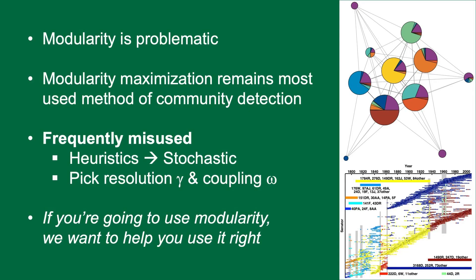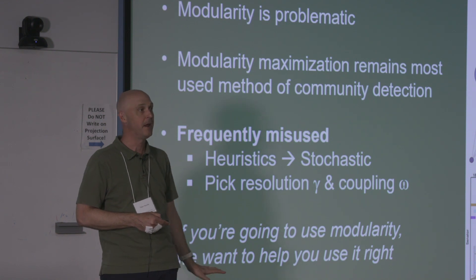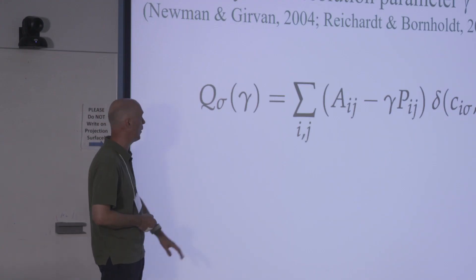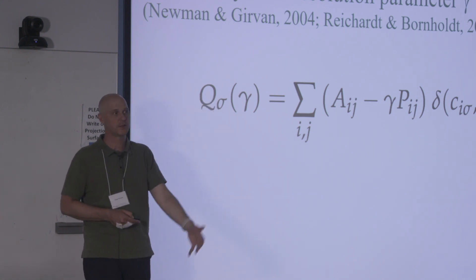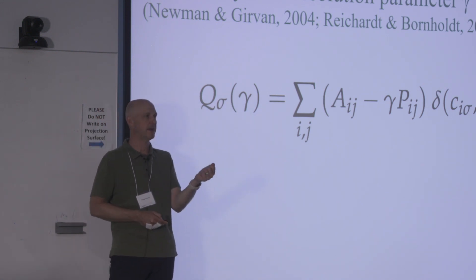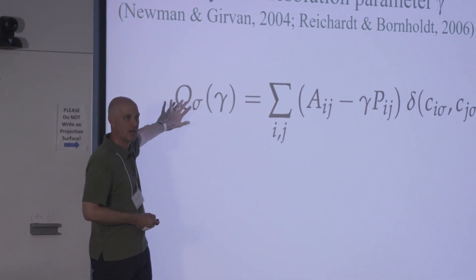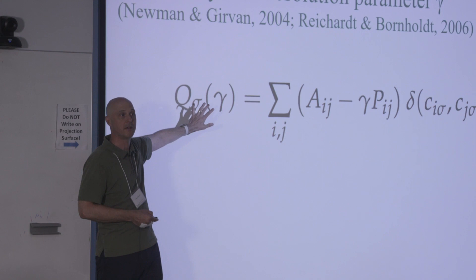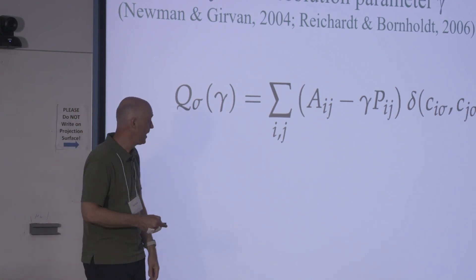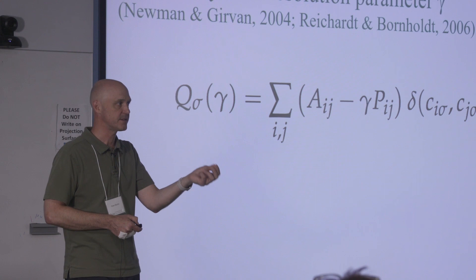Our whole mission here is that if you're going to use modularity, we want to help you use it right. That's why we developed CHAMP and this iterative parameter space mapping. Q is the traditional letter used for modularity — it nicely stands for quality. You can get into a nitpicking semantic argument about whether modularity means gamma equals one, or the general set of modularity-like objective functions for partition quality that depend on gamma. I'm going to use modularity and quality interchangeably.